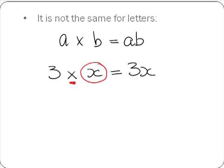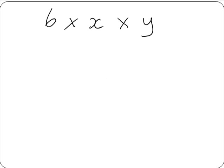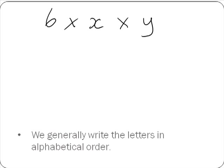So we will try a few more examples. Here we have 6 multiplied by x multiplied by y. In this instance we have a number and two letters. We generally write the letters in alphabetical order, so when we multiply this out we get 6xy. We drop the multiplication signs and write our numbers and letters together.